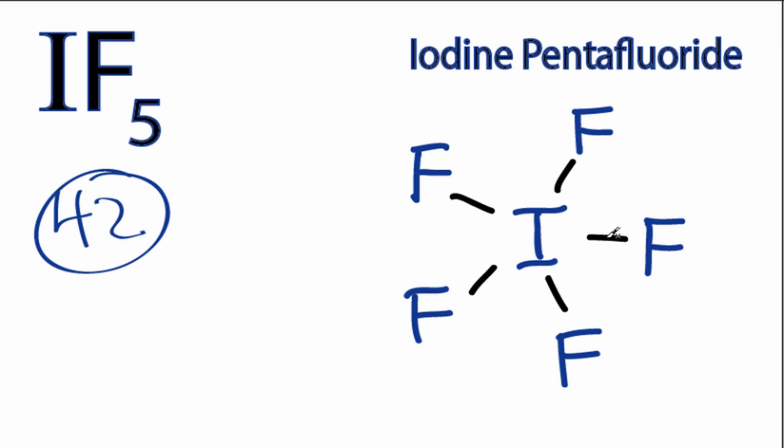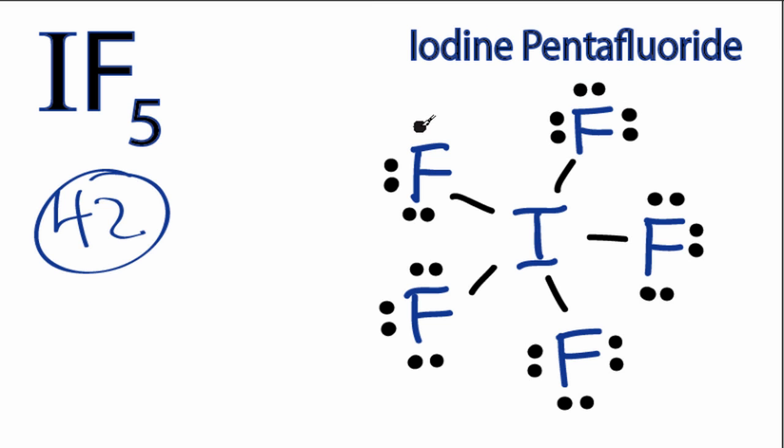So we've used a total of 2, 4, 6, 8, 10 valence electrons. Let's complete the octets for the fluorines. We have 10, 12, 14, and 40.